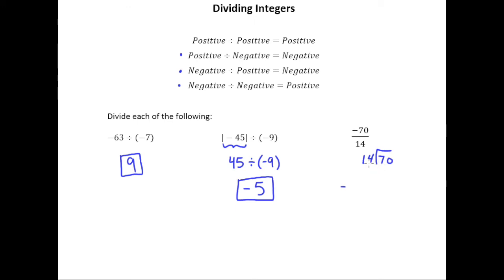15 doesn't quite fit into 70 a fifth time, however 14 is smaller than 15 so I think that actually five is a decent guess. And in fact, five times four is 20, carry the two, five times one plus two is seven, and so it turns out that the answer is negative 5.